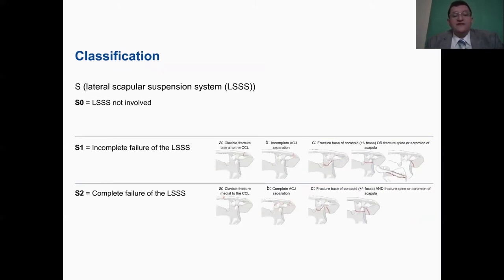While S2 is a complete failure of the lateral scapular suspension system, which usually involves either a fracture medial to the coracoclavicular ligament, or a complete AC disruption or the rupture of the coracoclavicular ligaments, or a fracture of the base of the coracoid with a fracture of the spine or that of the acromion.